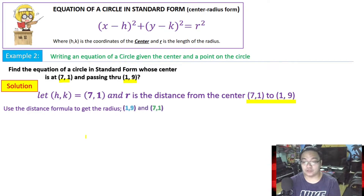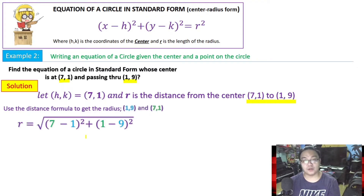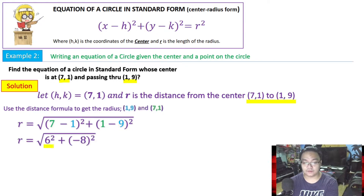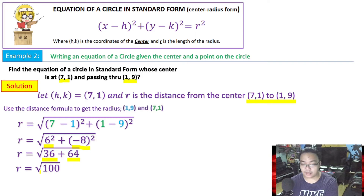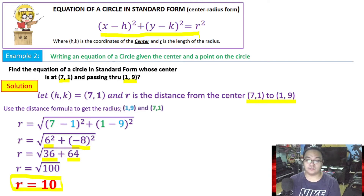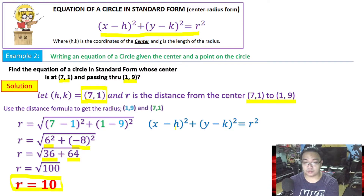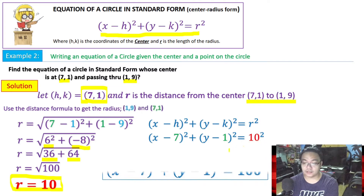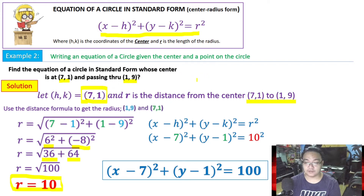Using the distance formula with center (7, 1) and point (1, 9), we substitute: the square root of (7 minus 1) squared plus (1 minus 9) squared. That gives us 6 squared plus (negative 8) squared, which equals 36 plus 64, so the radius is the square root of 100, or 10. Now using the standard form with center (7, 1) and r = 10: (x minus 7) squared plus (y minus 1) squared equals 100.